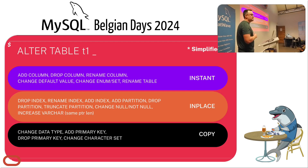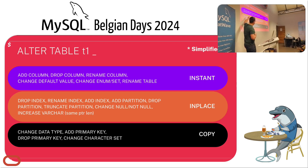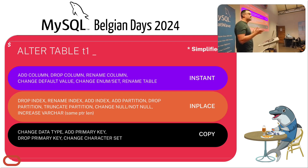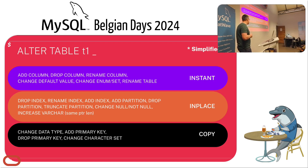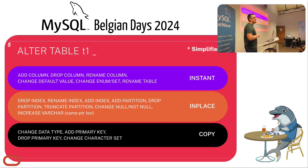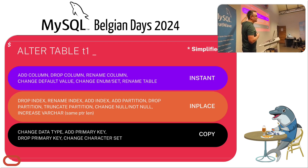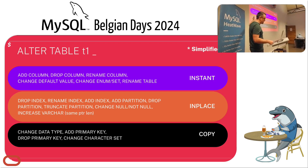The second most common set of changes we make is dropping and adding indexes, and these have to be done in-place, which is a bit of a funny one. The other change we make fairly commonly is changing the data type of certain columns. We don't typically add or drop primary keys. As we migrated to MySQL 8, we did some character set changing. But to summarize, Instant works really well and covers a large percentage of the changes we have to make.